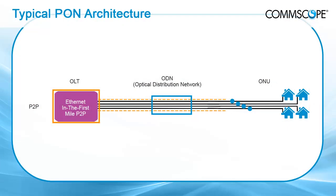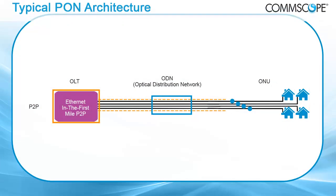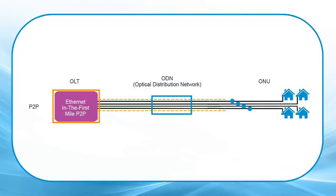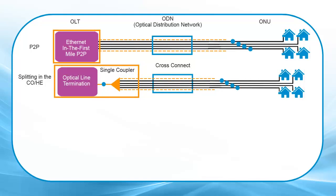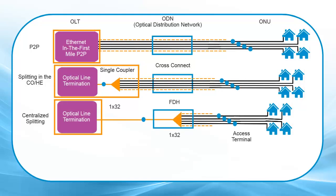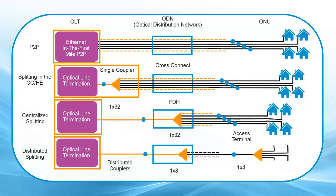Service providers deploying FTTX networks using point-to-multipoint PON topologies have a fundamental architectural choice to make regarding splitter placement in the network. This involves using centralized, single-stage, or cascaded, multi-stage splitter configurations in the distribution portion of the network. Both are deployed for a number of reasons according to the desired outcome of the business plan, and both come with their own set of advantages and disadvantages.